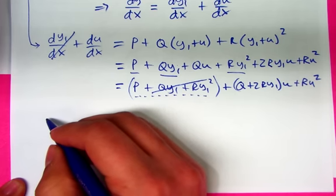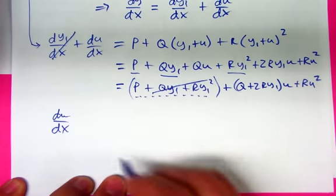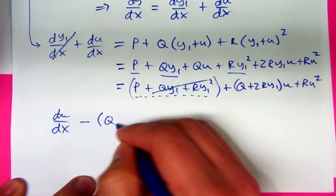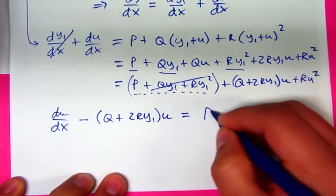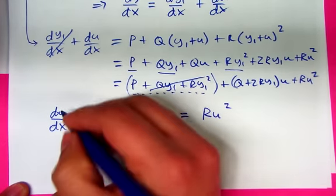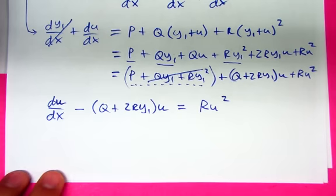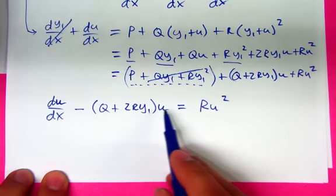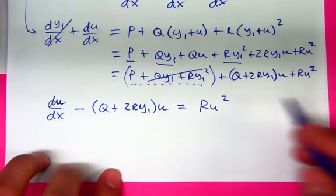Now notice something: dy/dx equals P + Qy + Ry squared, so dy1/dx equals P + Qy1 + Ry1 squared — which means those grouped terms cancel out. So we have du/dx minus (Q + 2Ry1)u equals Ru squared. What kind of equation is this? It's a Bernoulli equation — almost linear in u, except for that u squared at the end.